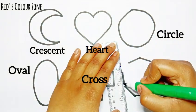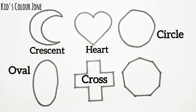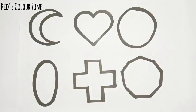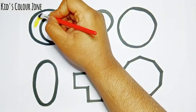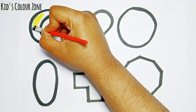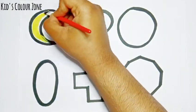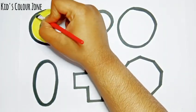This is a nonagon — it has nine sides. Now let's paint. This is yellow color — a yellow crescent.